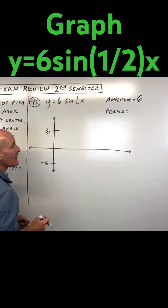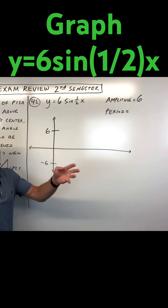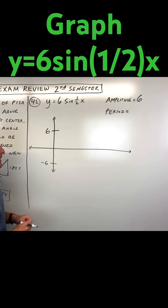When grouped with the x, it has the reciprocal effect, so that means instead of being the period of normally 2π for sine, it's going to be 2π times 2, which is 4π.